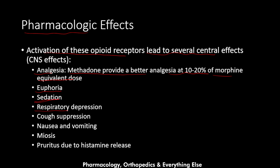Methadone leads to respiratory depression due to inhibition of the respiratory center. It also causes cough suppression due to inhibition of the cough center, and nausea and vomiting due to activation of the chemoreceptor trigger zone in the brain stem.